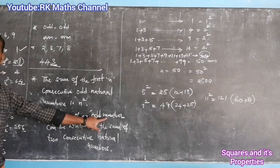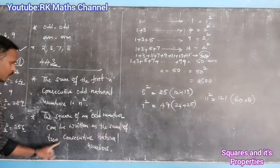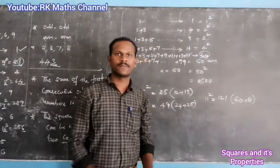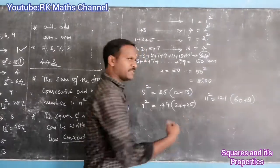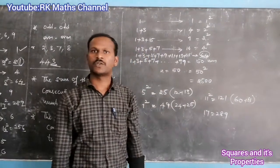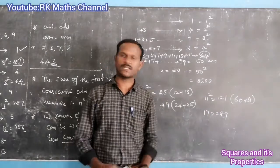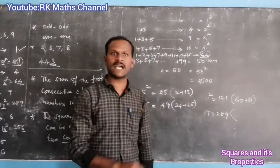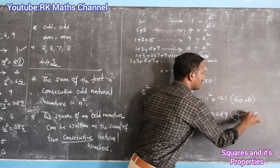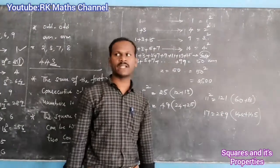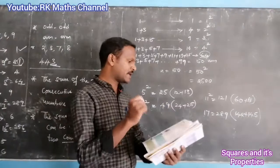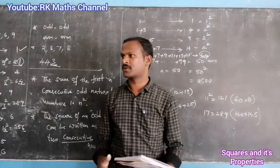The square of an odd number is the sum of two consecutive numbers. For example, 7 squared is 49, which equals 24 plus 25. And 11 squared is 121, which equals 60 plus 61. For 17 squared equals 289, that equals 144 plus 145. So any odd number squared can be expressed as the sum of two consecutive integers.